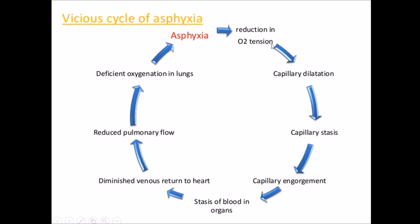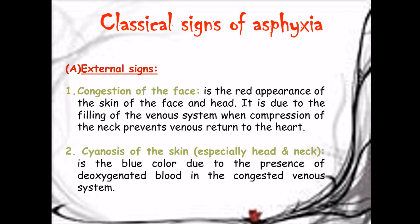This is the vicious cycle of asphyxia: reduction in oxygen tension leads to capillary dilatation, which leads to capillary engorgement and stasis of blood. This reduces venous return to the heart and reduces pulmonary blood flow, causing further deficiency of oxygen in the lungs, which further enhances the asphyxia — completing the vicious cycle.